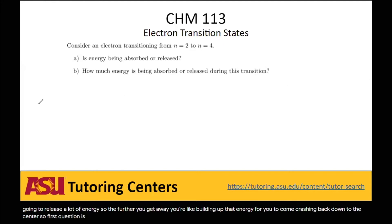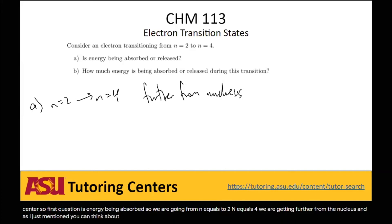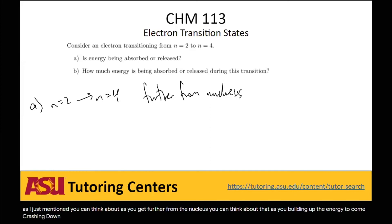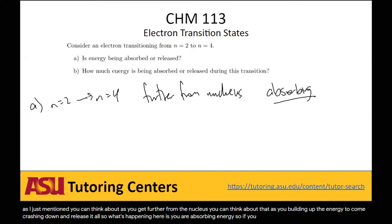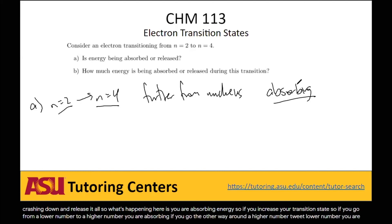So the first question is: is energy being absorbed? We are going from n equals 2 to n equals 4 — we are getting further from the nucleus. As I just mentioned, as you get further from the nucleus you're building up the energy to come crashing down. So what's happening here is you are absorbing energy. If you go from a lower number to a higher number, you are absorbing. If you go the other way, a higher number to a lower number, you are releasing.